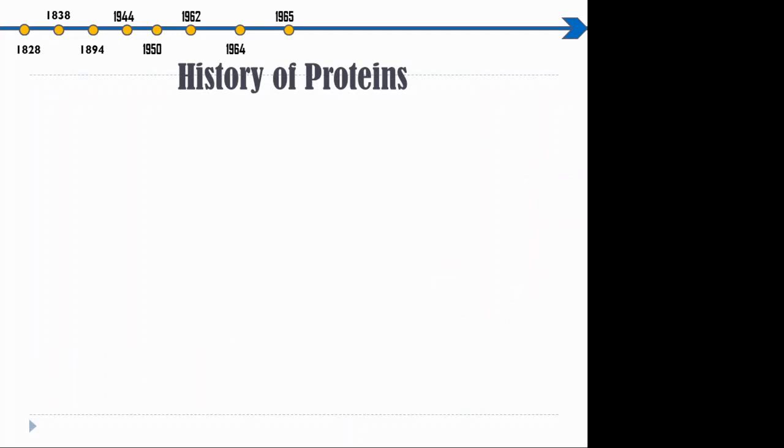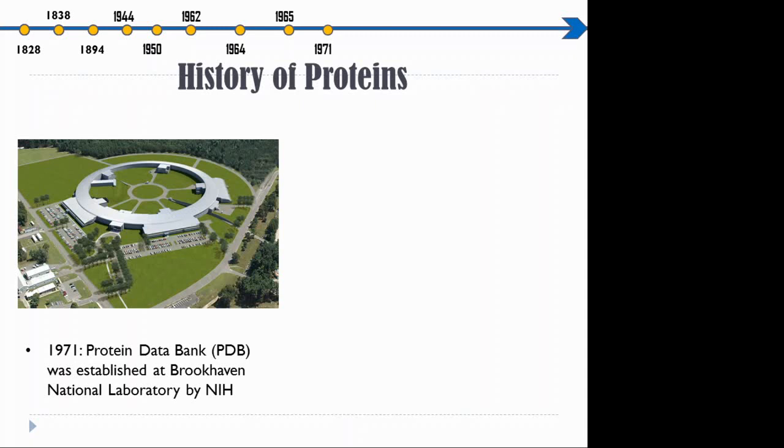Three years later, the first 3D structure of immunoglobulin was developed by David Davis and Brian Matthews. In 1971, the application of bioinformatics was done in the field of proteomics. Protein Data Bank, established at Brookhaven National Laboratory by NIH, created a repository for all protein structures. With XRD established, protein structure determination became much easier. In 1975, 2D gel and protein mapping for E. coli was done.